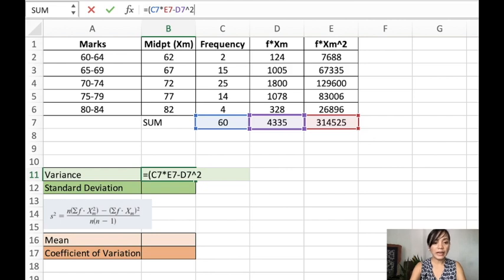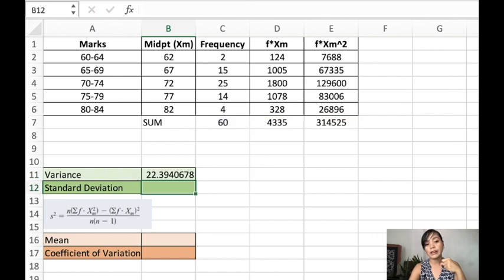And then we divide it to the numerator, to the denominator of n multiplied to 60 minus 1. Always put a parenthesis on your numerator and a parenthesis on the denominator, so Excel will know that they are separated. And I will click enter, and that is the variance.